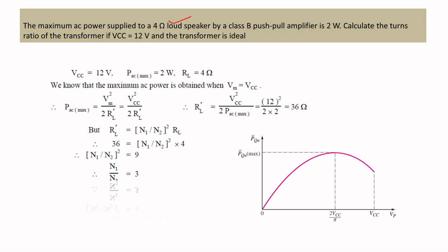The final problem: a Class B push-pull amplifier with a loudspeaker of 4 ohms and output power of 2 watts, with VCC = 12 volts and an ideal transformer. We need to find the turns ratio. The formula is P_ac_max = VCC² / (2 × RL_dash), so RL_dash = VCC² / (2 × P_ac_max) = 144 / 4 = 36 ohms.